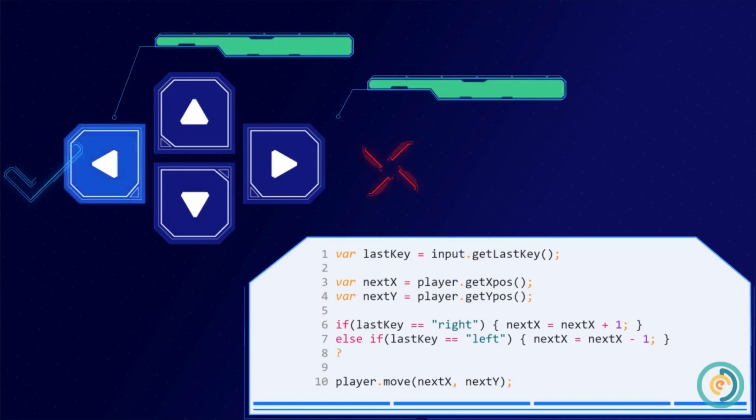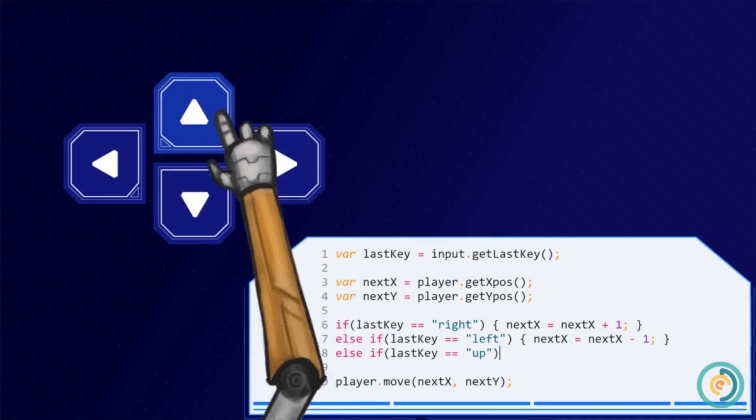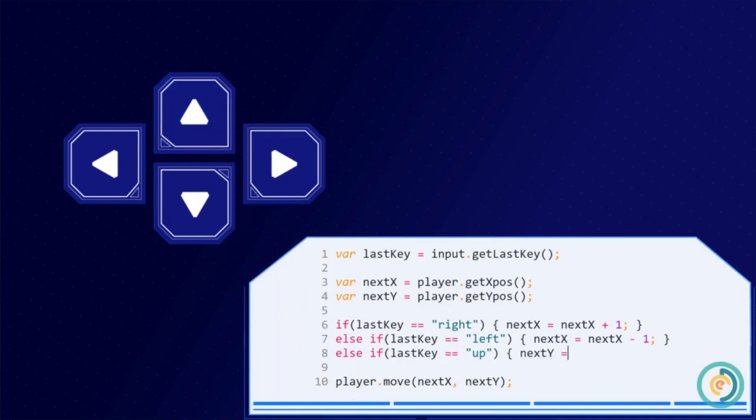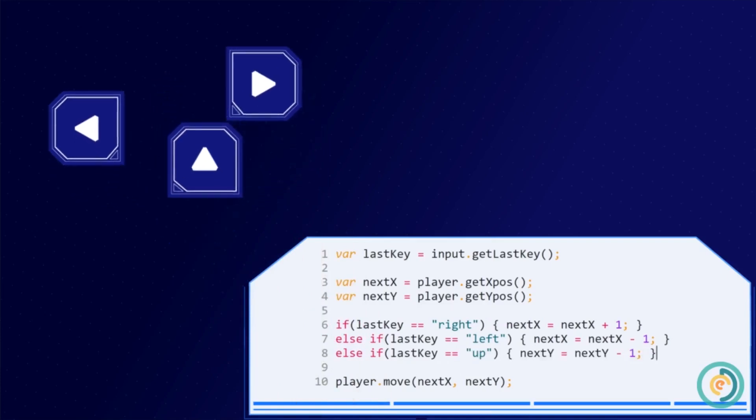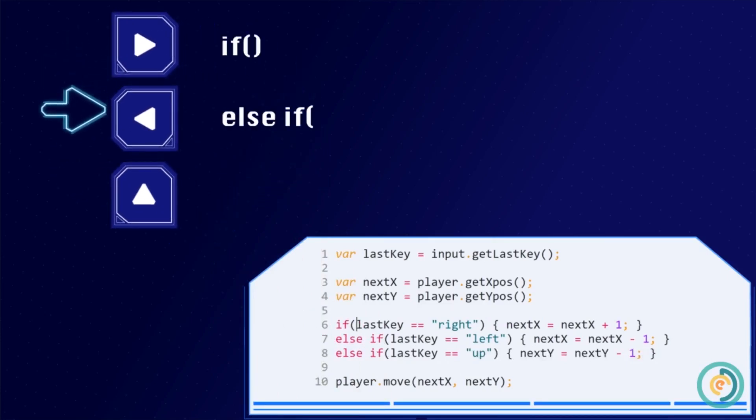Let's add a second else if statement to check if the up key was pressed. Its code block must decrease the value of next y by one. As a result, only one of these code blocks will ever be executed.